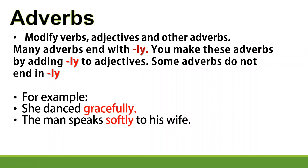'She danced gracefully' and 'the man speaks softly to his wife.' To identify an adverb, ask 'how': How did she dance? — Gracefully. How did the man speak to his wife? — Softly. So 'gracefully' modifies the verb 'danced' and 'softly' modifies the verb 'speaks.' That's why they are called adverbs.